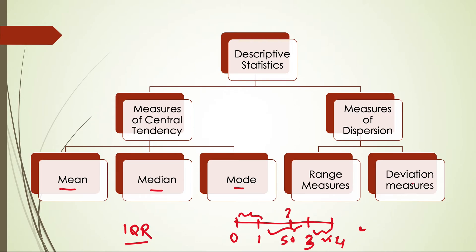These different measures come under range measures. Then we have deviation measures, which include mean deviation and standard deviation. There are also other measures like coefficients of dispersion and variance. We will see all of these measures in more detail as we move further.